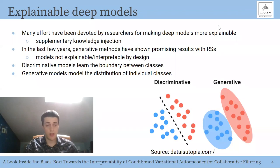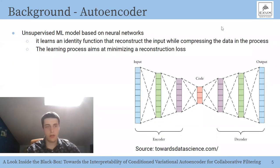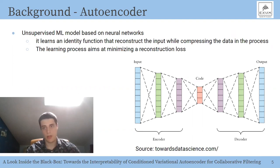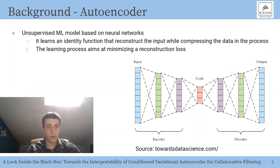Discriminative models learn the boundary between classes, while generative models model the distribution of individual classes in the dataset. Autoencoders are unsupervised machine learning models based on neural networks that learn an identity function, reconstructing the input while compressing the data in the process. Thanks to these compressive capabilities, they are widely used for dimensionality reduction. The learning process aims at minimizing the reconstruction loss, which is usually the mean squared error between the input and the output.